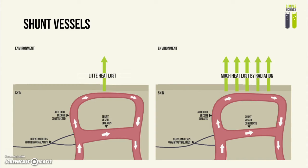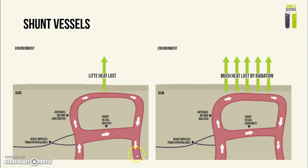Here is an example of shunt vessel function in thermoregulation. In a cold environment, where you need little heat loss from the body, the arterioles become constricted so that less blood flows to the skin capillaries. At the same time, the shunt vessel dilates, so most of the blood flows through the shunt vessel rather than through the capillary bed, effectively bypassing it entirely.